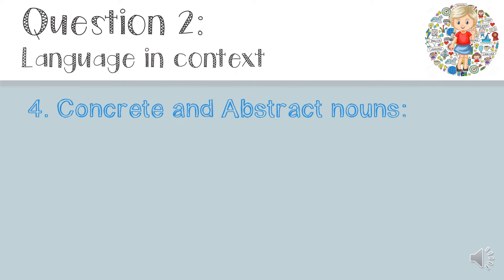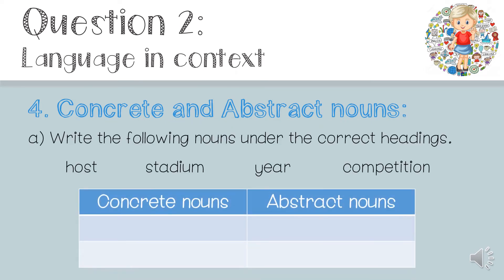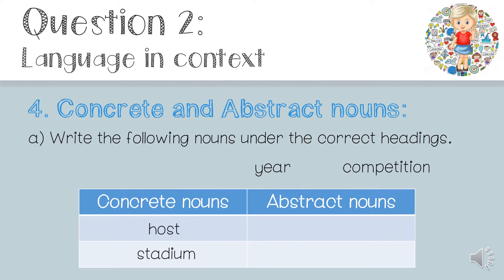Now let's look at concrete and abstract nouns. You had to write the following nouns under the correct headings: host, stadium, year, and competition. 'Host' — this means to be the host, a person. If I'm the host of a party, then I'm a concrete noun; you can see or touch me. 'Stadium' is a place — we can see the stadium, so it's concrete. 'Year' — we can't see a year, so it's abstract. 'Competition' — we can see a competition between two people, but we can't see competition itself, so it's abstract.